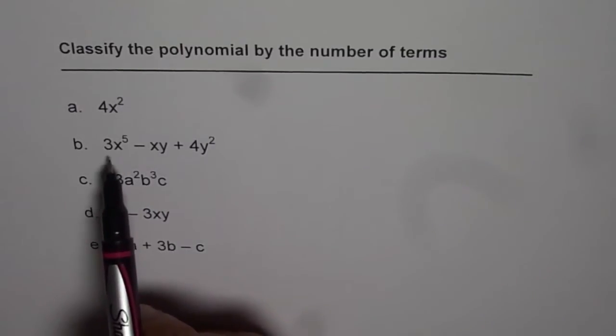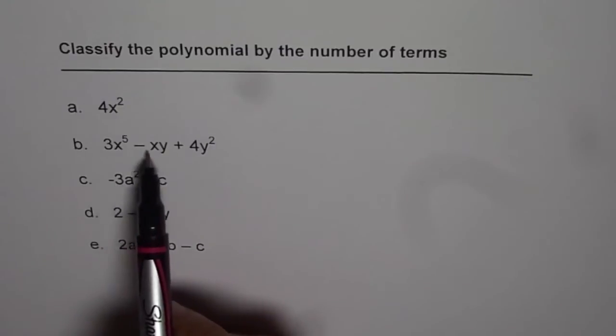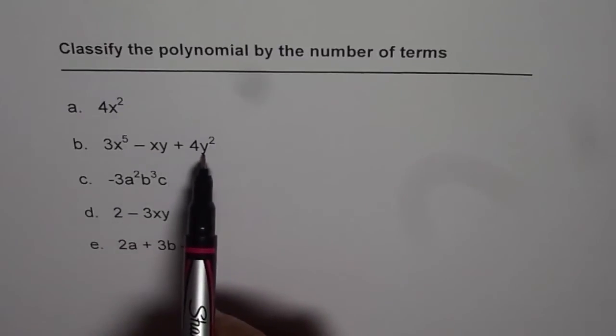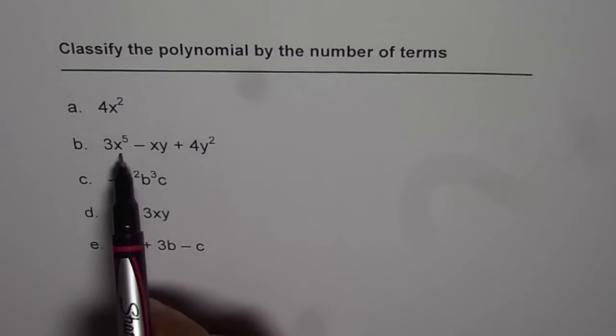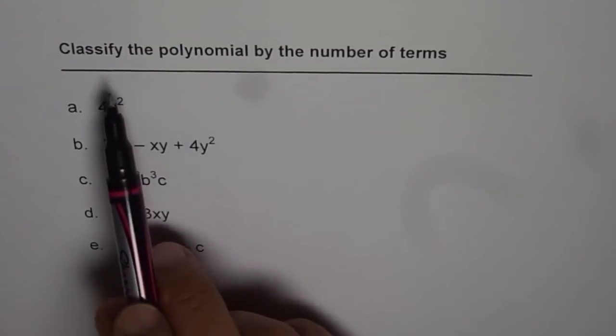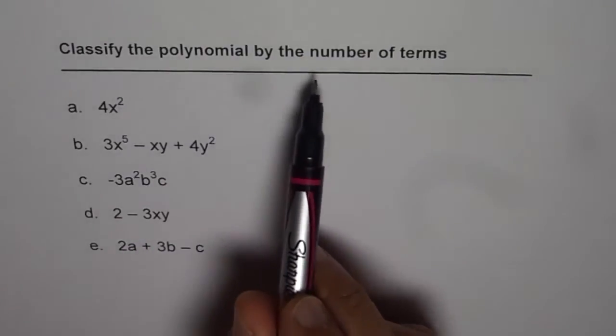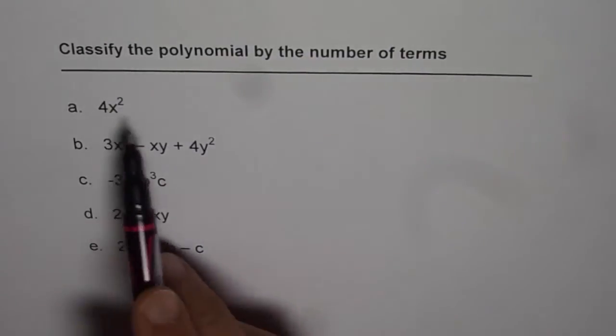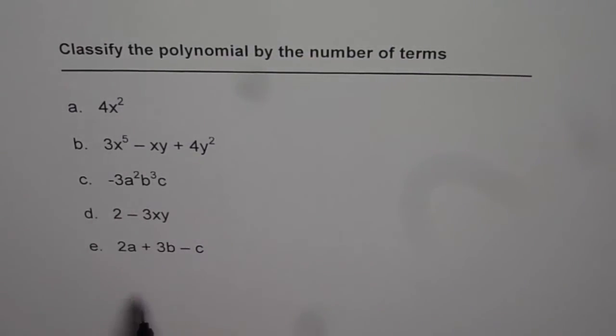Now these are the terms. When we say 3x to the power 5 minus xy plus 4y squared, then we have three terms here. So these three are the terms. Now when we say classify the polynomial by the number of terms, then let us count how many terms each one has.